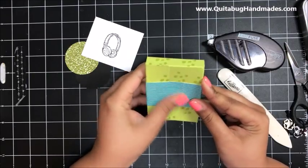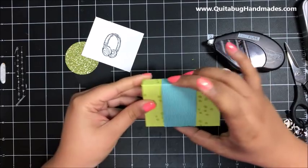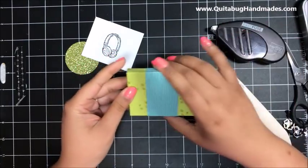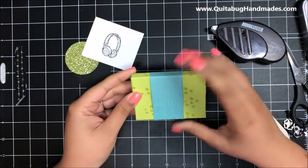I'll just add some adhesive here, line it up and adhere it down. Now see it can move and slide and it's easy. It'll be easy to open.